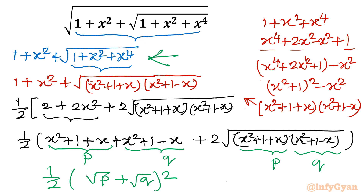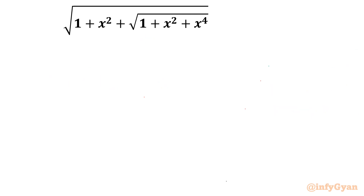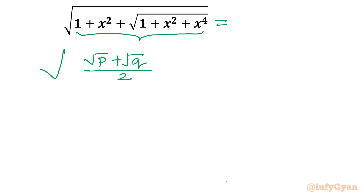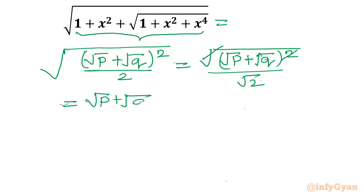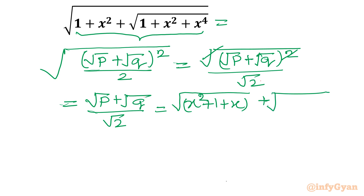So in the original radical expression, our conclusion is this value we have calculated. I write: square root of (root P plus root Q) whole square, divided by root 2. Cancelling the square and square root, what is left is (root P plus root Q) over root 2. Substituting back: P is x square plus 1 plus x, and Q is x square plus 1 minus x. So the final answer is (root(x square plus 1 plus x) plus root(x square plus 1 minus x)) divided by root 2.